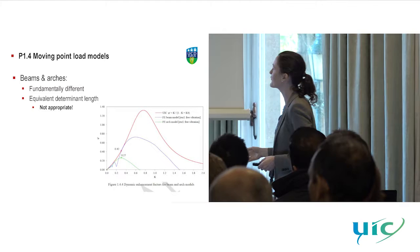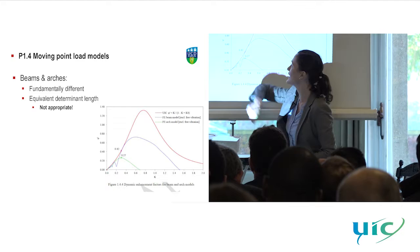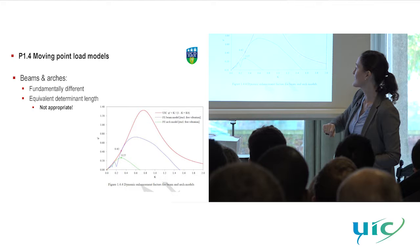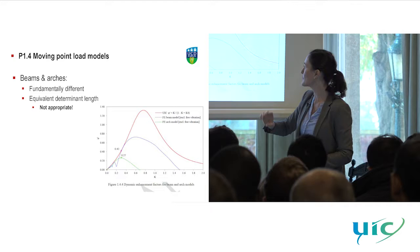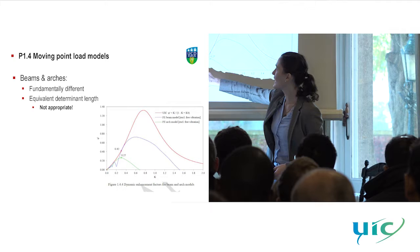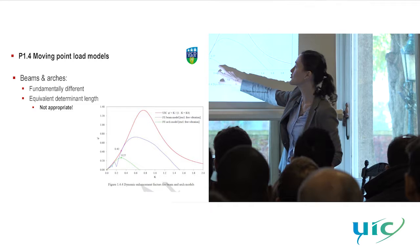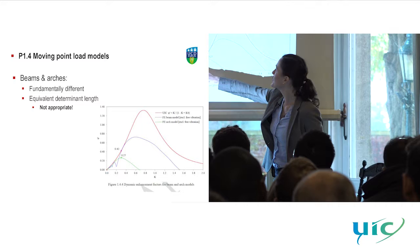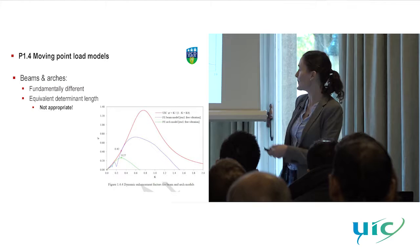Going back to the overall curve looking at dynamic amplification factor phi-dash versus speed parameter k — the ratio of velocity to critical velocity — this is the theory it's based on: the beam model. These are the results from our simple beam-element arch model. You can see it's quite different, and you don't approach anywhere near the same levels of dynamic amplification as for the beam model.